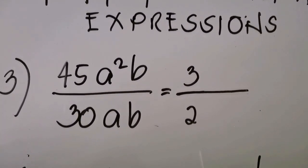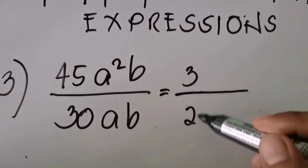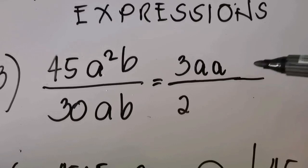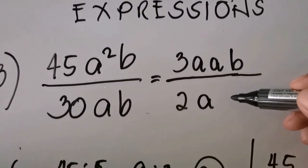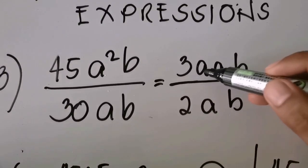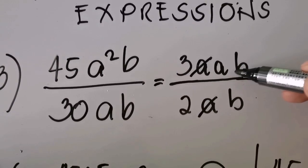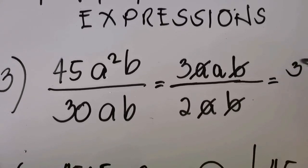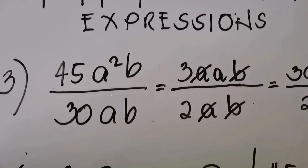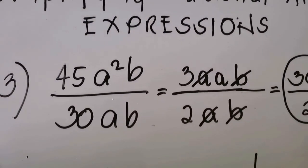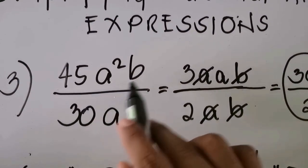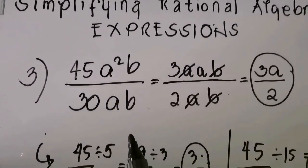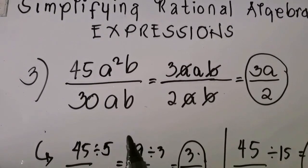So going back to the full solution: 45 divided by 30 is 3 over 2. We have a squared over a, and b over b. We cancel one a from the numerator with the a in the denominator, and cancel b with b. What remains is 3a over 2. This is the simplified form of 45a squared b over 30ab. If you have questions, just comment below and I will answer in our next video tutorial.